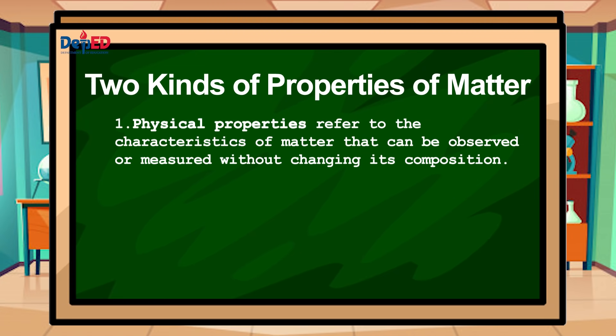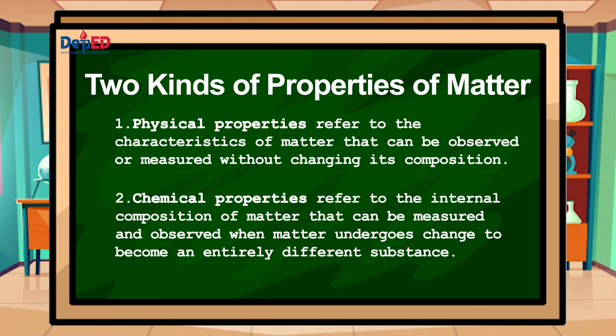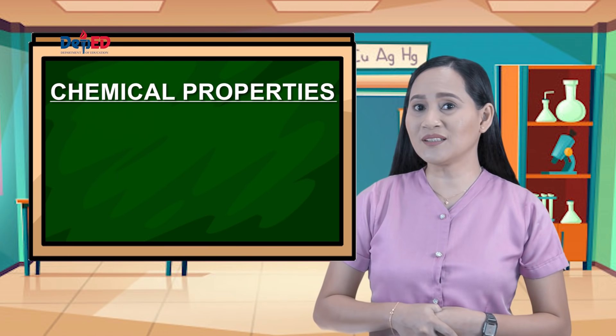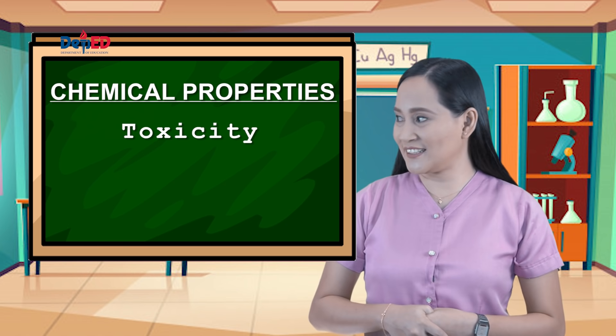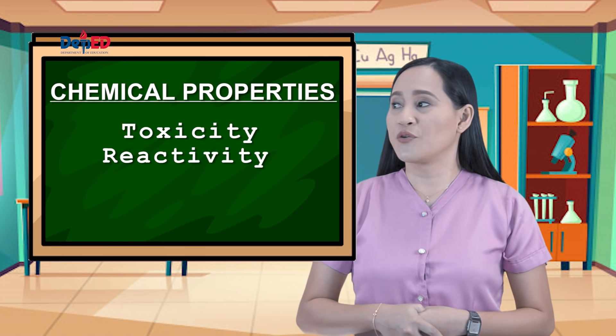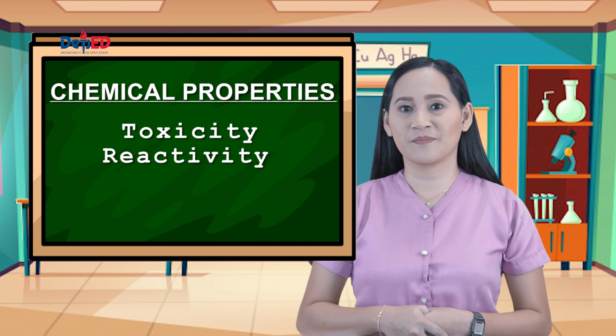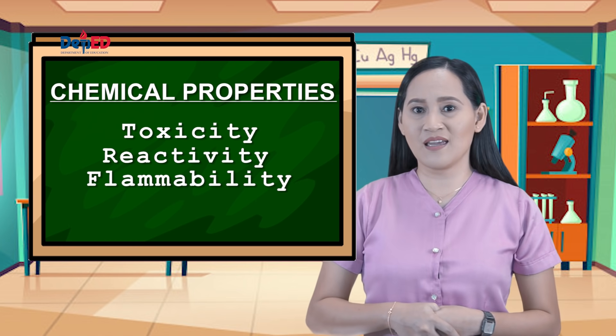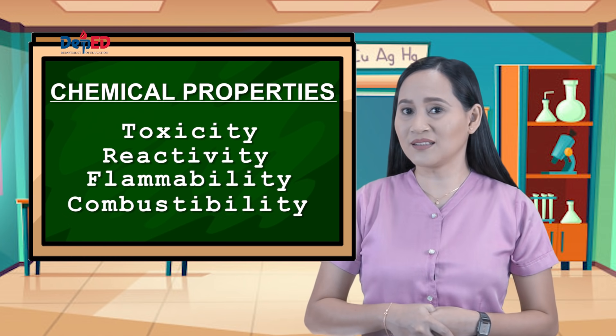The second kind is chemical properties, which refer to the internal composition of matter that can be measured and observed when matter undergoes change to become an entirely different substance. Some examples are toxicity, reactivity, flammability, and combustibility.